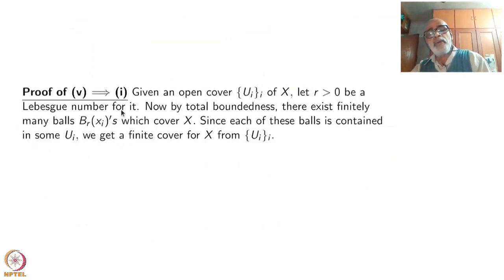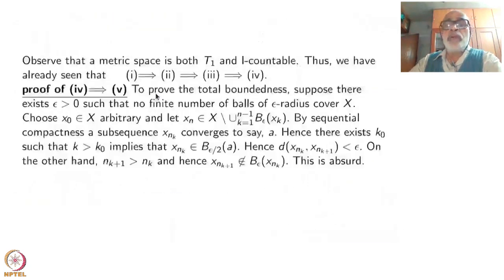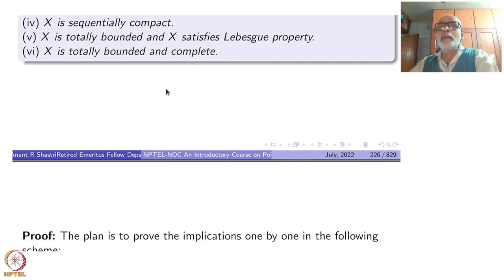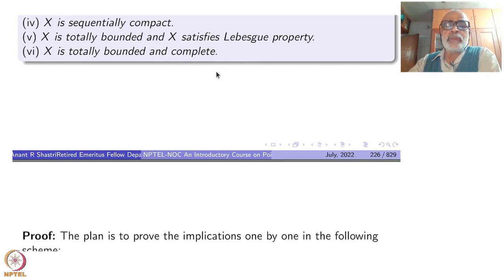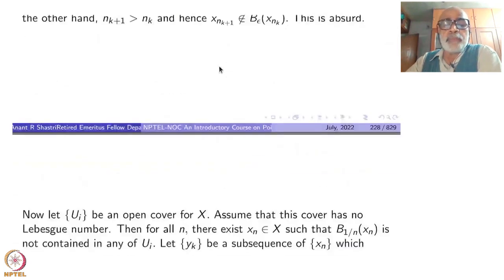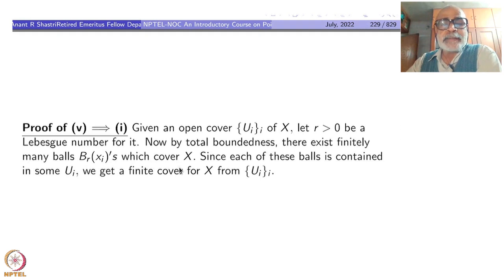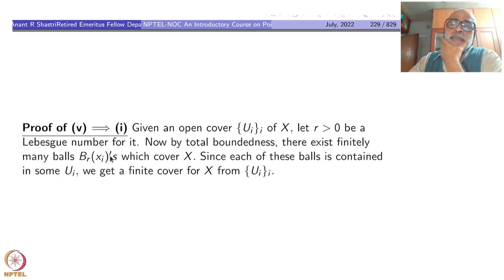Now I will prove 5 implies 1: totally bounded plus Lebesgue property gives compactness, just like countably compact and Lindelöf implies compactness. Start with any open cover; let r positive be a Lebesgue number. By total boundedness, there exist finitely many balls B_r(xᵢ) which cover X. Since each of these balls is contained in some U_i, the corresponding U_i's will cover X. So that is all — proof complete.